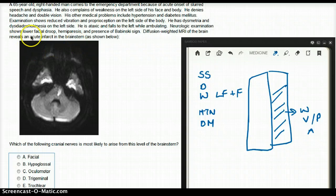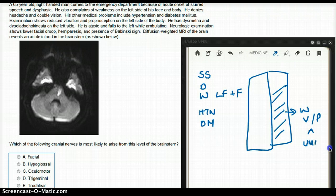Neurologic exam shows lower facial droop, hemiparesis, and presence of Babinski's sign, so upper motor neuron damage. Diffusion-weighted MRI of the brain reveals an acute infarction on the brainstem.